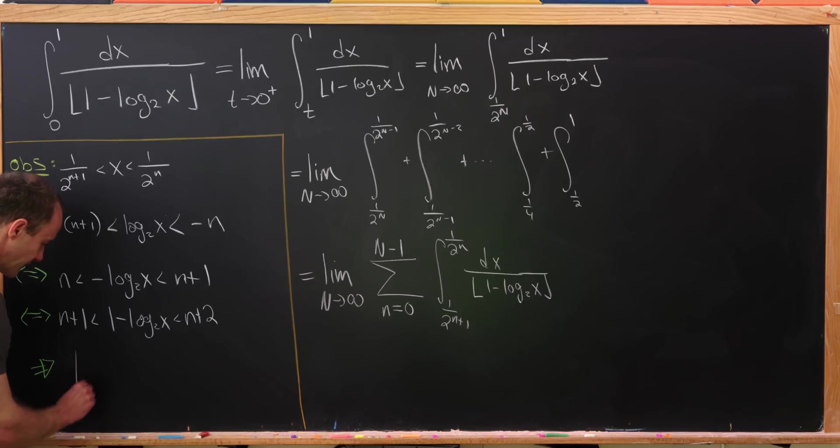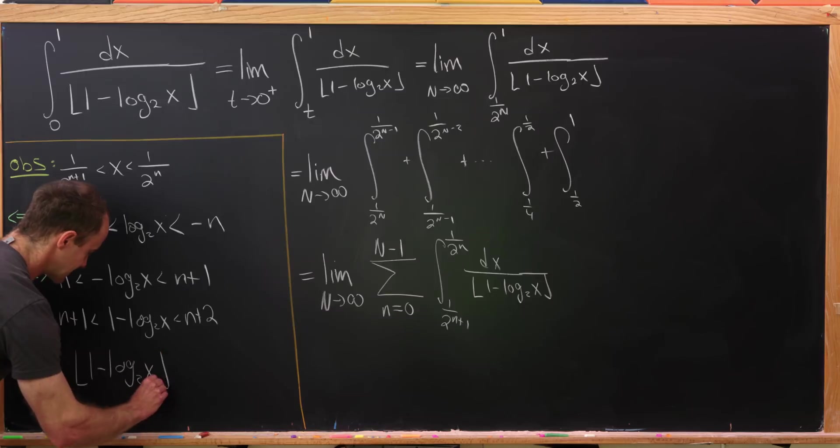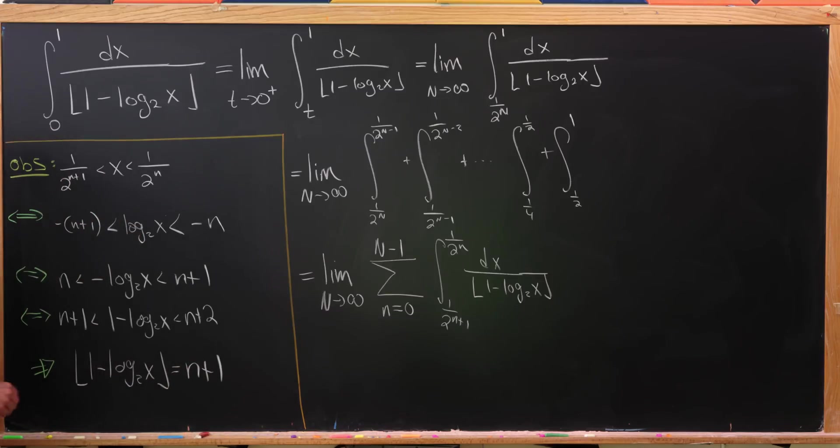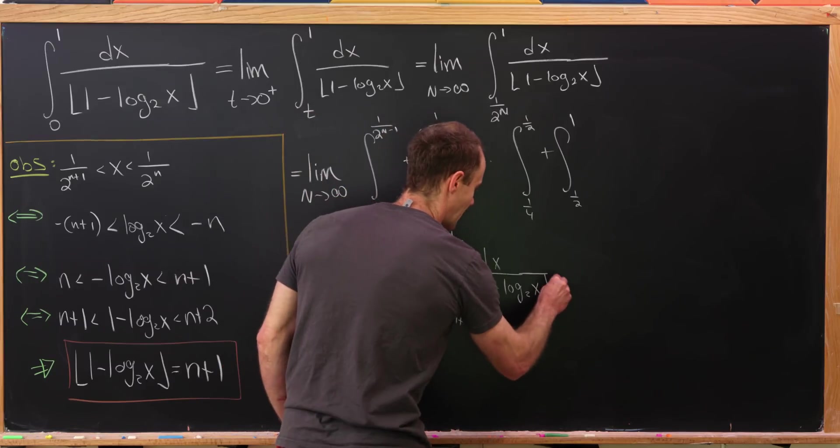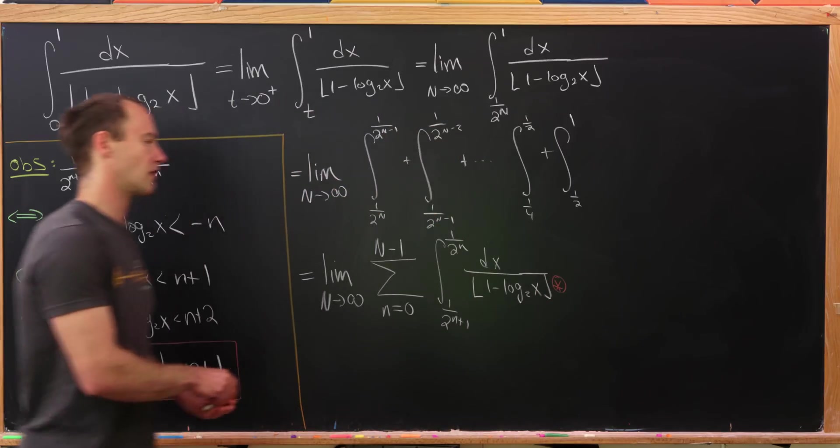So in other words, we have the floor of 1 minus log base 2 of x is simply equal to n plus 1 in this case. So let's put a box around that and then maybe point out that that will be inserted right here.